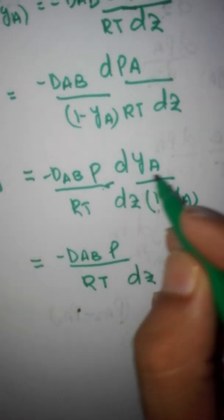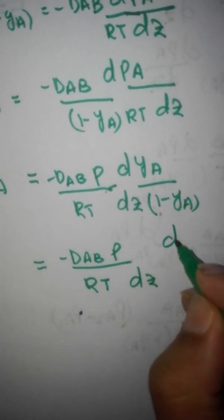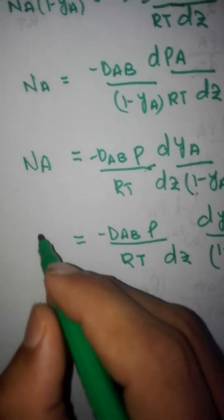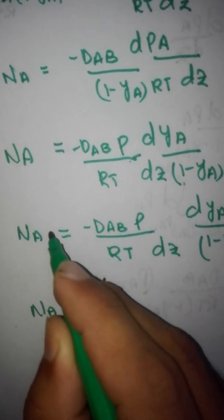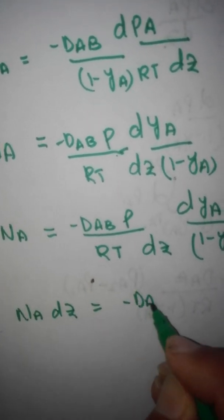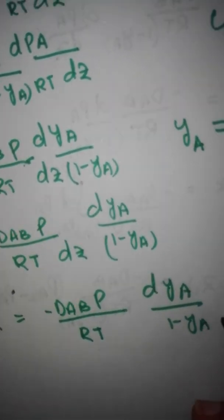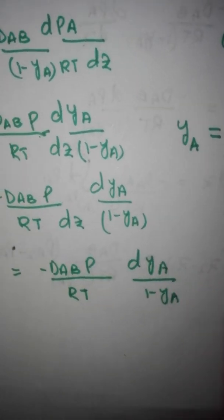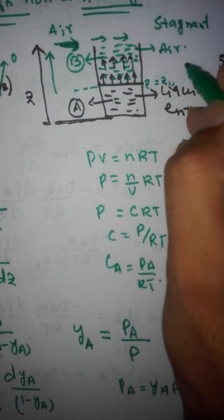This can be further written as: NA times DZ equals minus DAB times total pressure divided by RT times DYA divided by (1 minus YA). We integrate from Z1 to Z2. At Z equals Z1, the mole fraction of A is YA1.